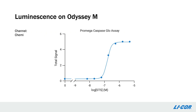The first assay I want to share is a luminescence assay. The Promega CaspaseGlo assay was used to assess apoptosis in HeLa cells treated with increasing concentrations of the apoptosis-inducing compound staurosporine. Luminescence was measured on Odyssey-M using the chemiluminescence channel. As you can see, the total caspase signal, which correlates with the degree of apoptosis in each sample, increases with increased staurosporine, which is what we expect to see.